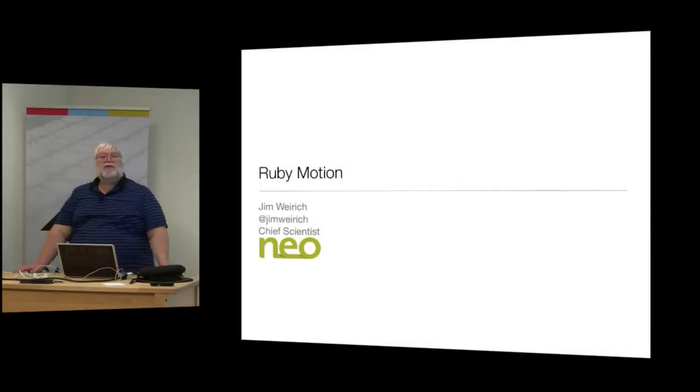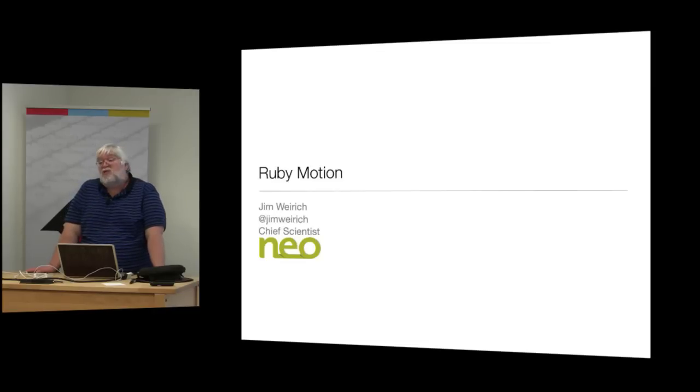I'm Jim Wyrink from a company called NEO, a Rails development firm. We do lots of Ruby, lots of JavaScript, and we're getting into the Clojure market as well. We're worldwide with eight offices all over the world, as far as Singapore, South America, and Edinburgh, Scotland. I'm here to talk about RubyMotion.